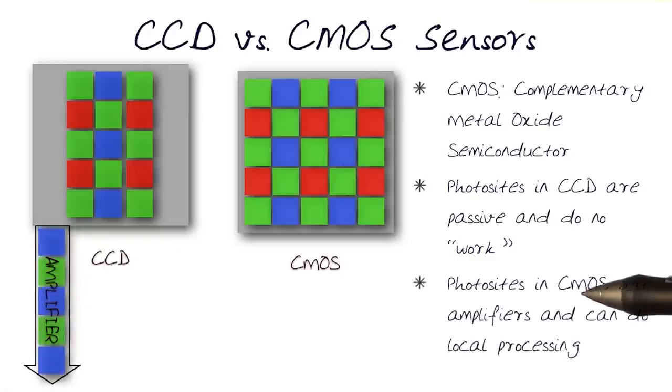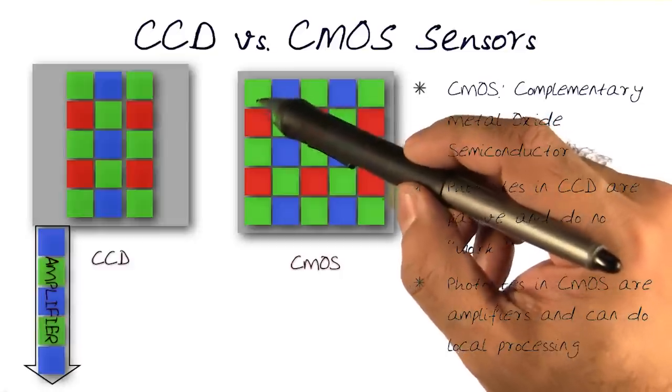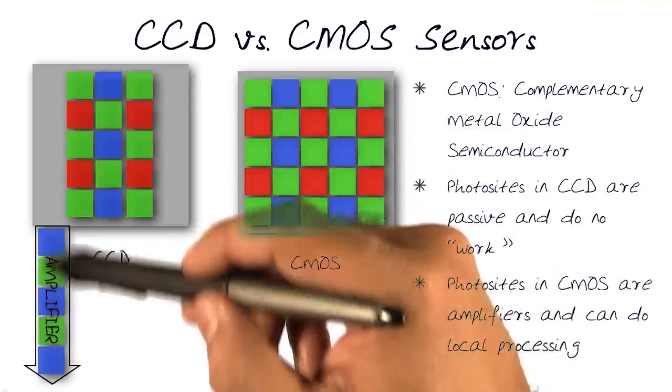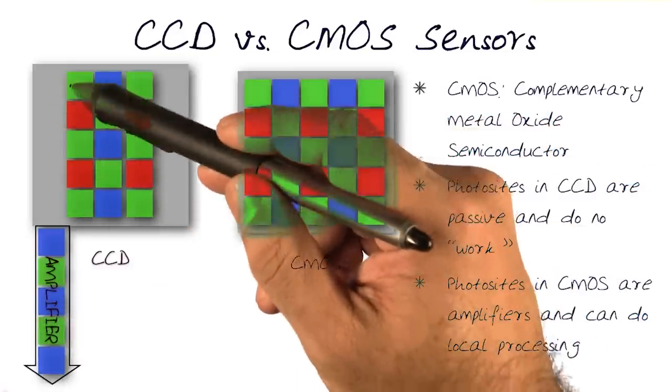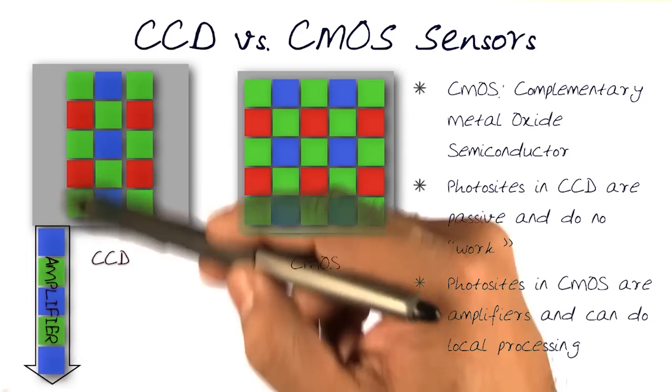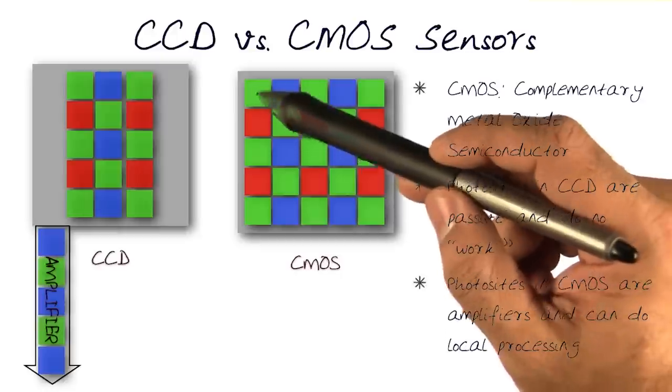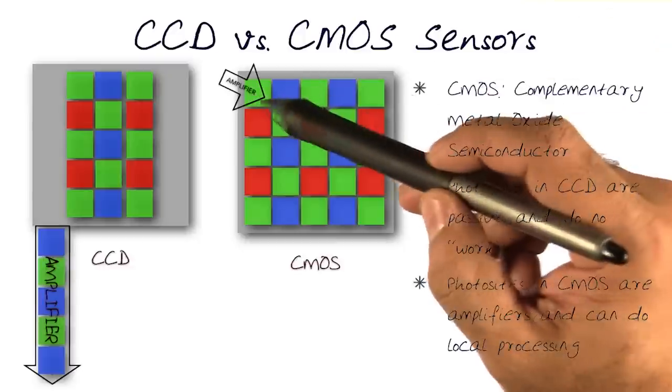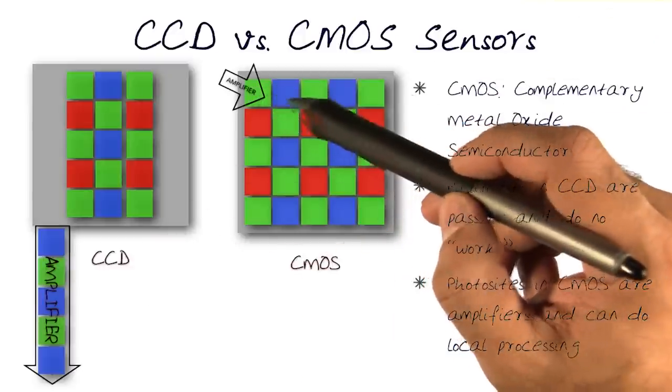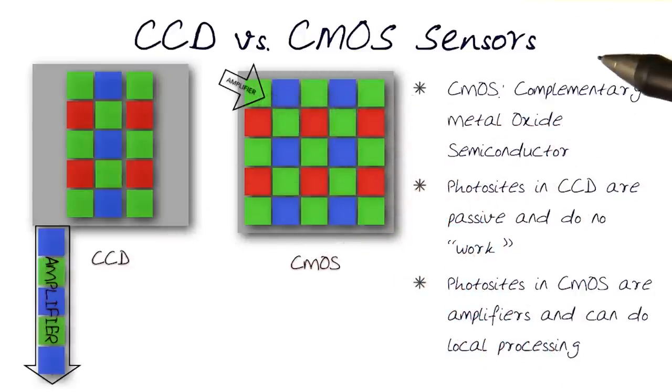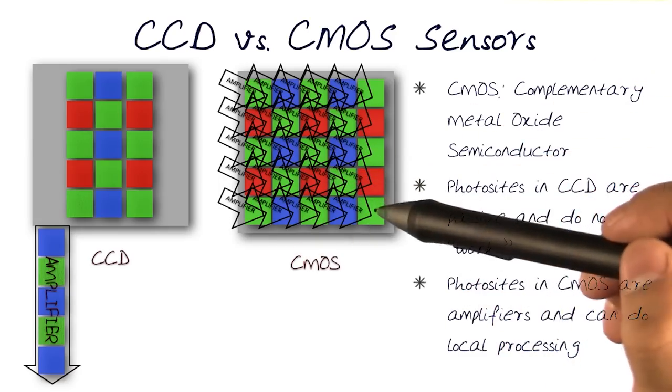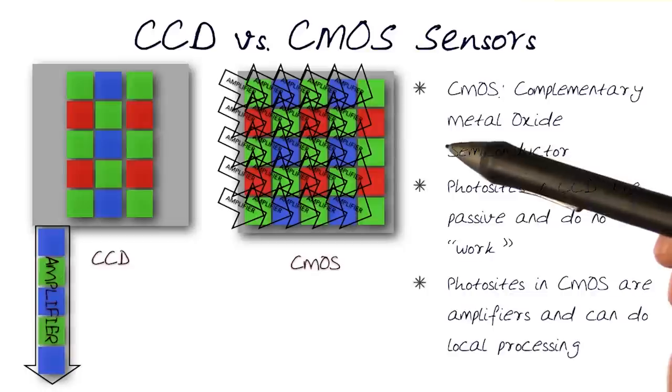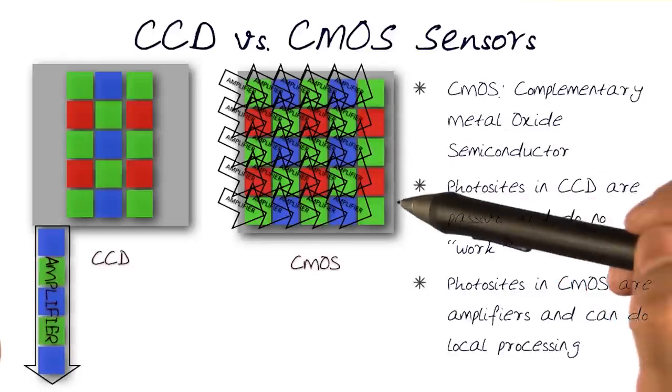Photosites in CMOS actually have an amplifier right there, and they can do local processing. So the readout at each and every one of them is local, as opposed to being done after all things have been stored. Every readout is done at the local sensor itself. In essence, there is a small local amplifier at each and every one of the photosites. Each photosite has its own amplifier, which allows them to do local processing.